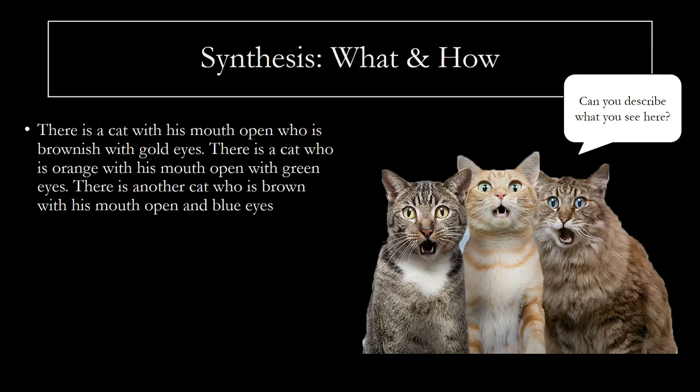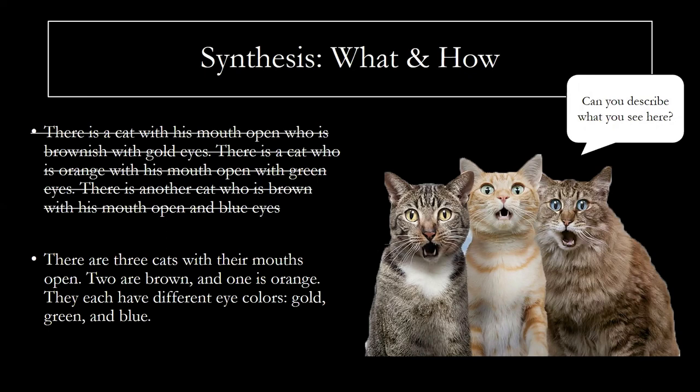Instead, you would see the similarities and differences, recognize the patterns in the image, and frame your description around those patterns or differences — something like this: there are three cats with their mouths open; two are brown and one is orange; they each have different eye colors — gold, green, and blue. Here we've written a description that doesn't give each cat its own separate description, but rather treats the three cats as a meaningful composition in their relationship to each other. It still includes all the pertinent details, but puts those details within the context of the whole. Synthesis involves seeing not just the parts as individual pieces, but recognizing how they come together to make a meaningful whole.